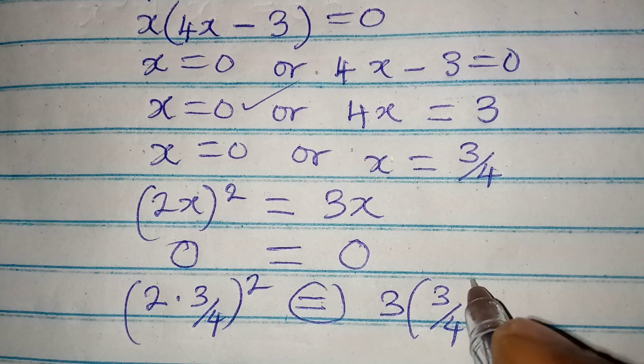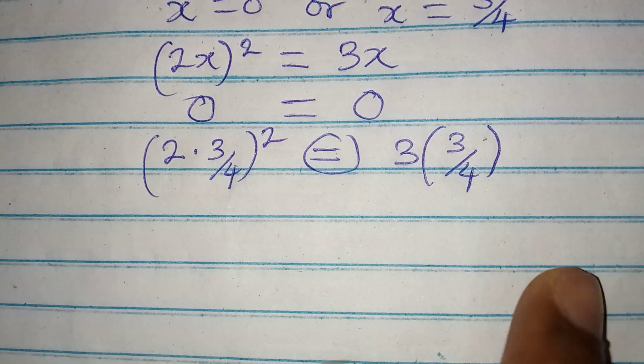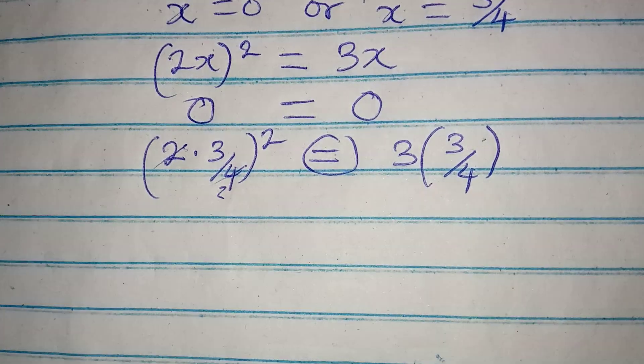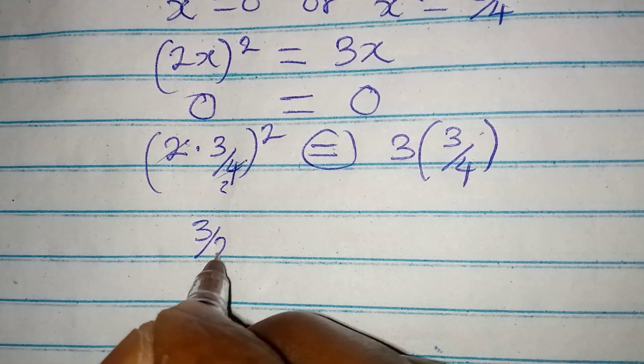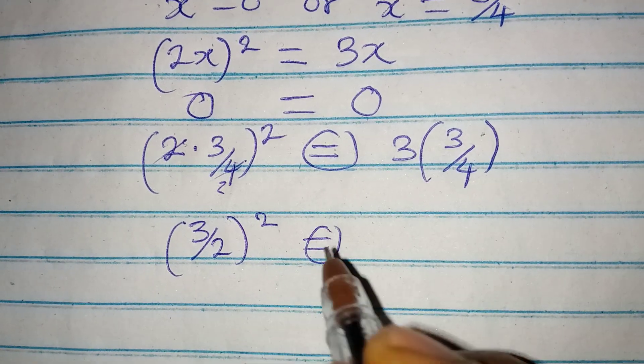To continue with this, 2 can go here 2 times, so this means that we are having (3/2)² will be equal to 3 times 3 is 9, and then we have it over 4.